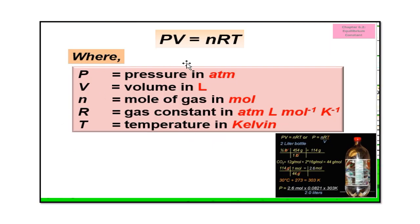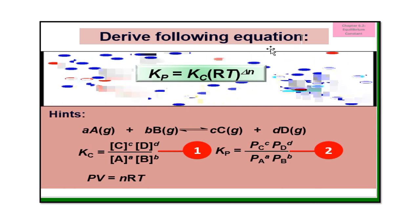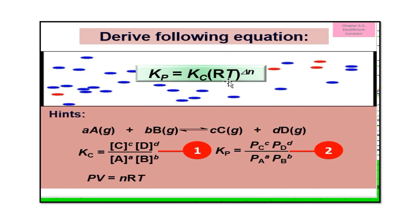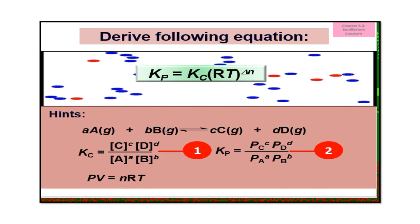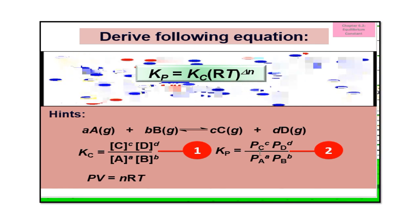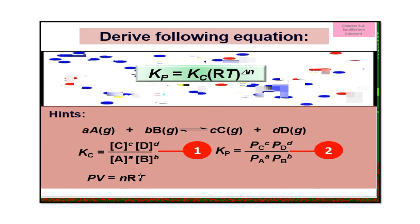You learned PV = nRT in chapter 5 on ideal gases. P is pressure in atm, V is volume in litres, n is moles of gas, R is the gas constant in atm·L/mol·K, and T is temperature in Kelvin. To derive Kp = Kc(RT)^Δn, use the general equation: aA + bB → cC + dD. First write the Kc and Kp expressions.